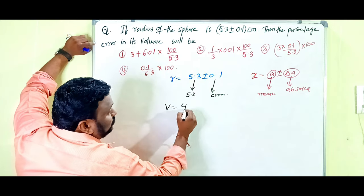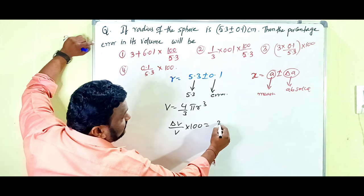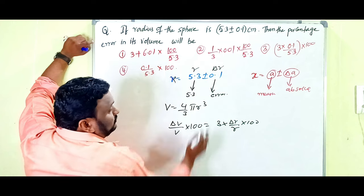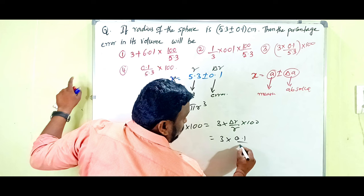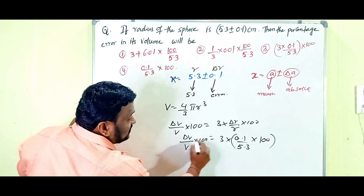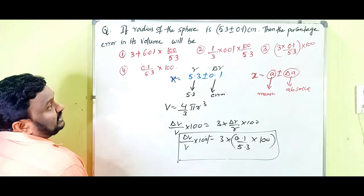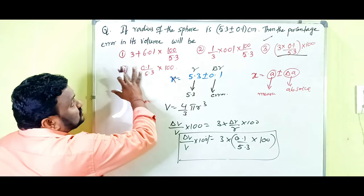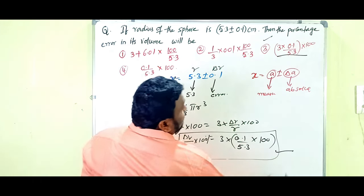The volume of a sphere is V = (4/3)πr³. So, ΔV/V × 100 = 3 × Δr/r × 100. Substituting Δr = 0.1 and r = 5.3: ΔV/V × 100 = 3 × 0.1/5.3 × 100. So the third option is the right answer. This is a simple question — you can verify by checking each option.